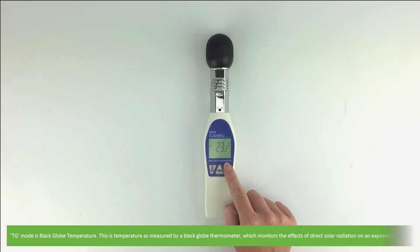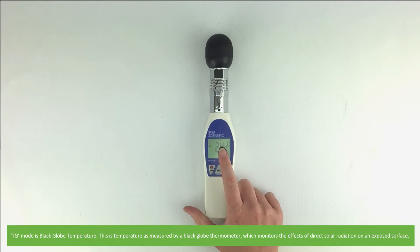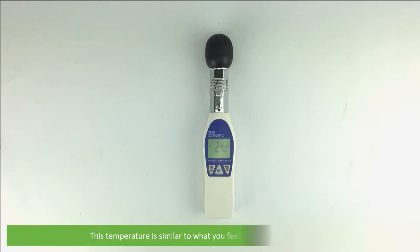TG mode is black globe temperature. This is temperature as measured by a black globe thermometer, which monitors the effects of direct solar radiation on an exposed surface. This temperature is similar to what you would feel when standing in the sun.